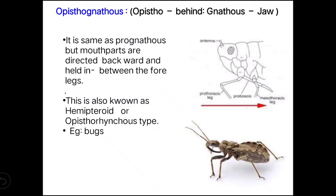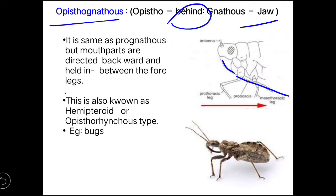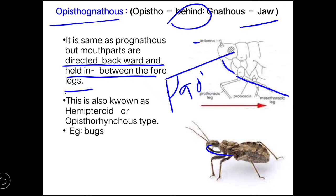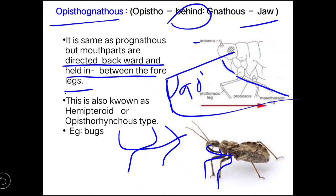Next is opisthognathous. Opistho means behind and gnathus means jaw. In this type, the head is also at about 90 degrees to the body axis, but the mouth parts are directed backward and held between the forelegs. This is also known as the hemipteroid or opisthorhynchous type. This opisthognathous type of mouth part is found in bugs.